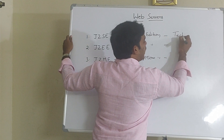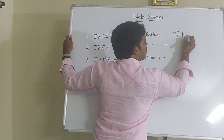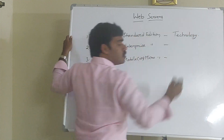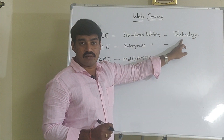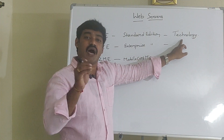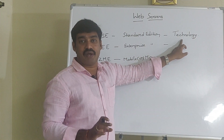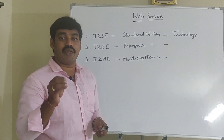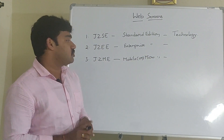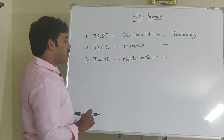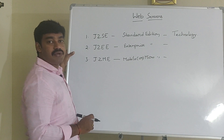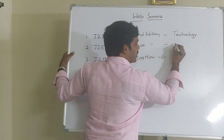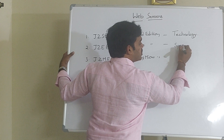J2SE is a technology. Technology means it is an already implemented one. We can download it from the net and we can install it to our system. Second one is J2EE. J2EE is not a technology — it is a specification.